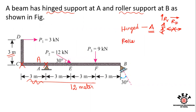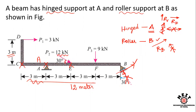Hinged support means vertical and horizontal reactions — a vertical reaction RAV and a horizontal reaction RAH. Point B is the roller support. The roller support can move along one direction based on the inclined plane. Point F has a 9 kN load and point D has a 3 kN horizontal load in the right-side direction. These are the different loading conditions given on the beam.